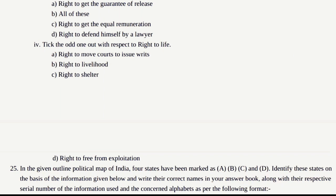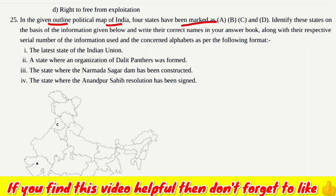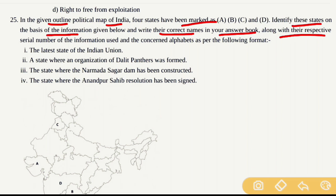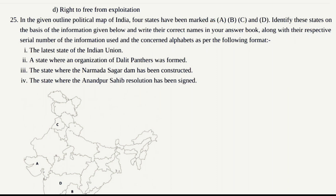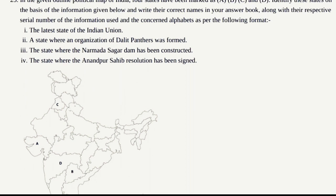With that, all the passage-based questions have been discussed with answers. Now let's move to Question Number 25, which is a map-based question. In the given outline political map of India, four states have been marked as A, B, C, and D. Identify these states on the basis of the information given below and write their correct names in your answer book along with the respective serial numbers and alphabets.